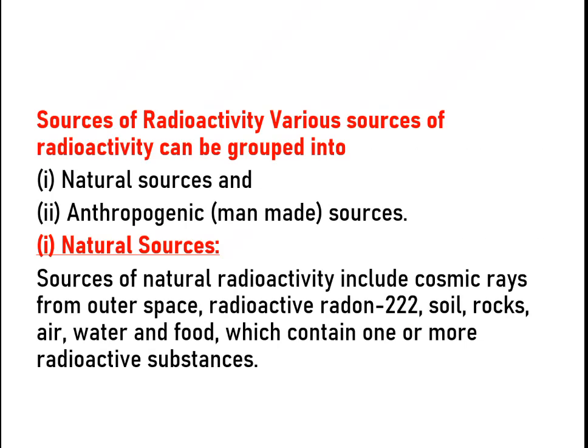There are two types of sources of radioactive isotopes: natural sources and anthropogenic, meaning manmade sources. Natural sources include cosmic rays coming from outer space, and radioactive radon, which contains one or more radioactive substances.